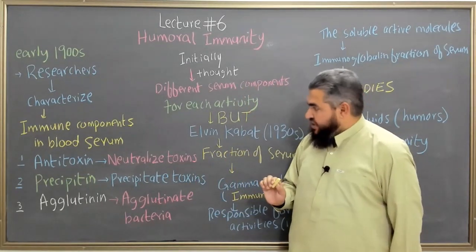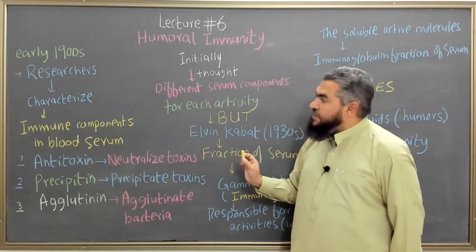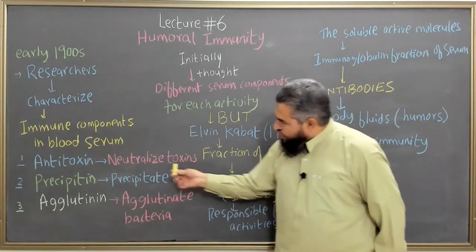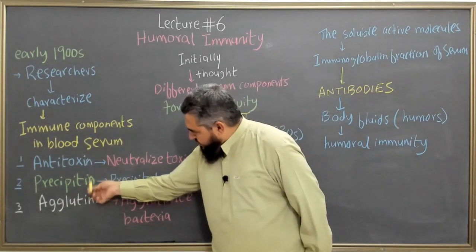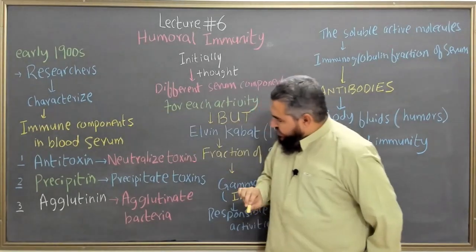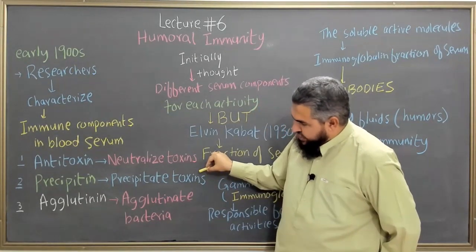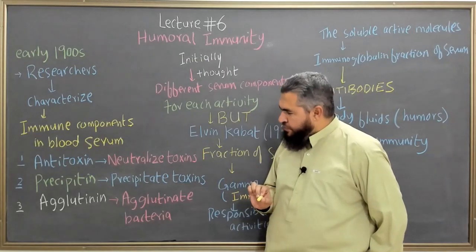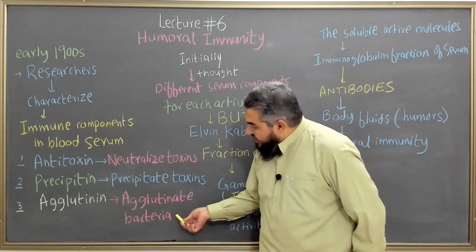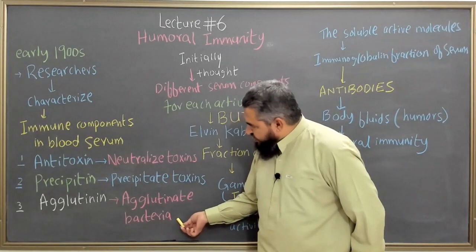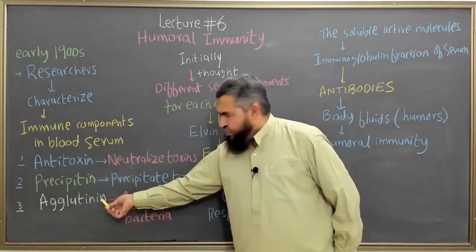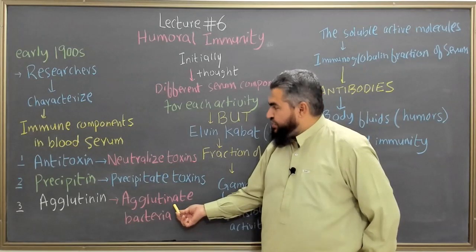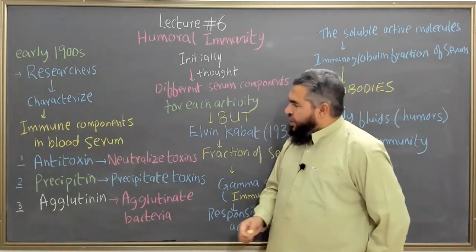The second component they identified was components in the blood serum that are able to precipitate toxins, and they were calling them precipitins. These precipitins were immune components in the blood serum able to precipitate the toxins. The third component they believed in was immune components in the blood serum that are able to agglutinate bacteria, and these components were called agglutinins. These agglutinins were able to agglutinate the bacteria or the toxins produced by these bacteria.